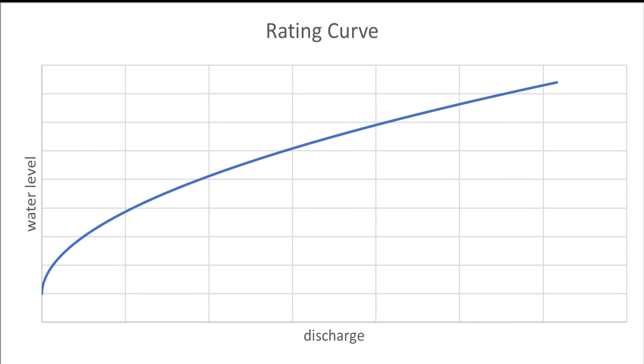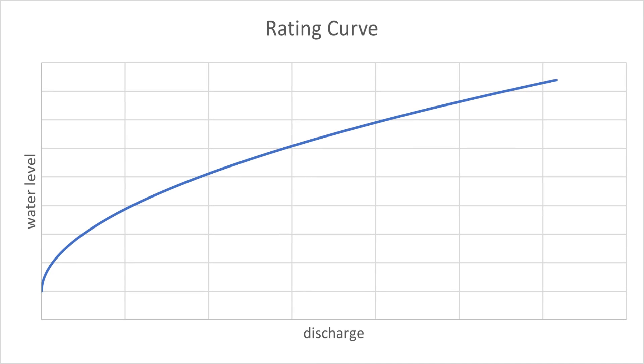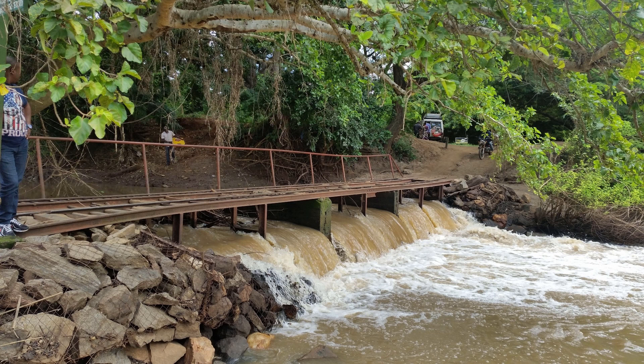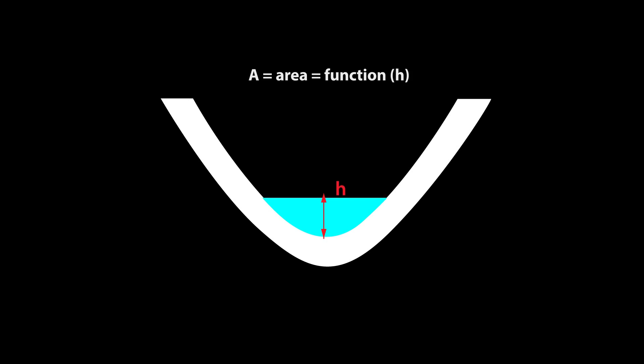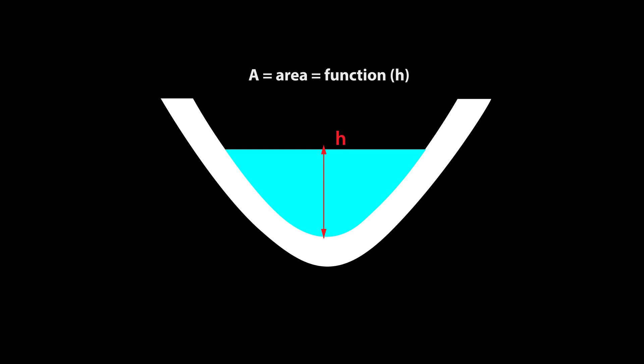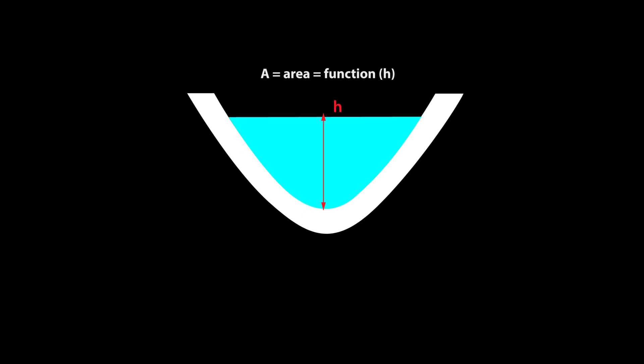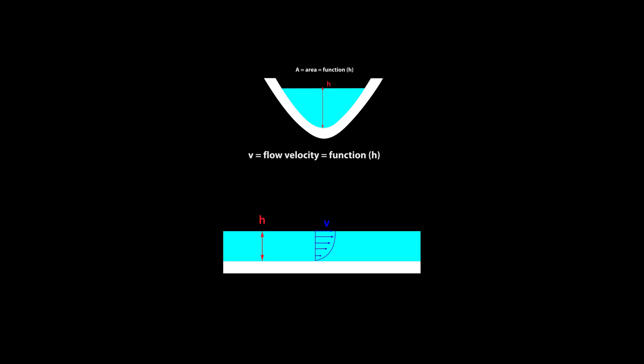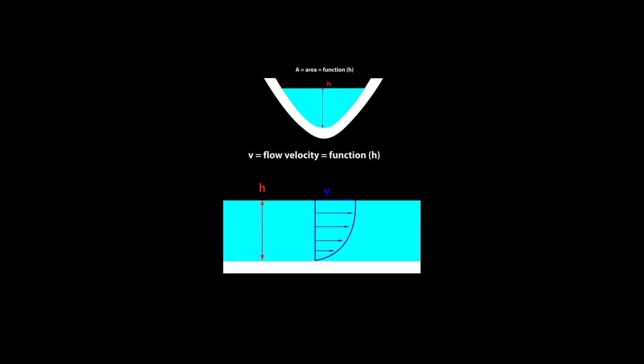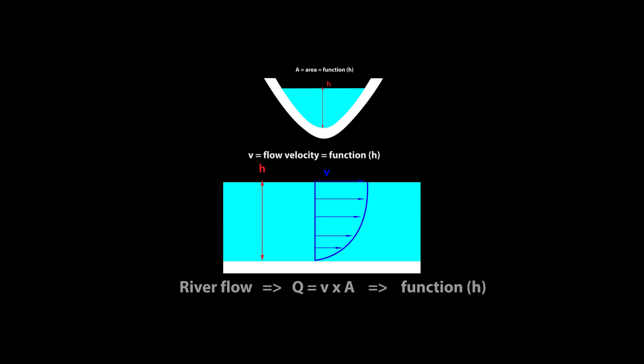The rating curve is the relation between water level and river flow at the control section. The key assumption is that water level is a reliable indicator of flow area and flow velocity. These two parameters, flow velocity and flow area, make up discharge.